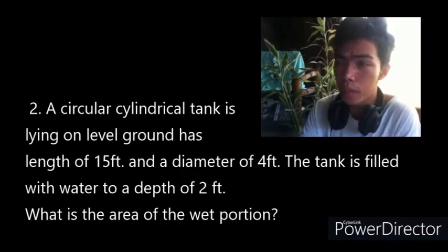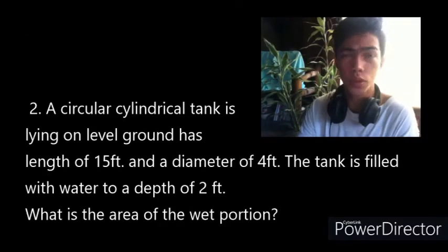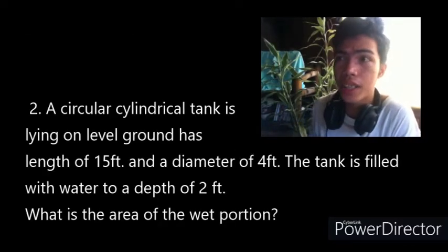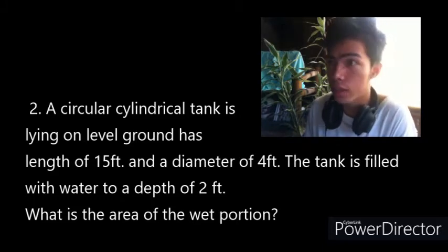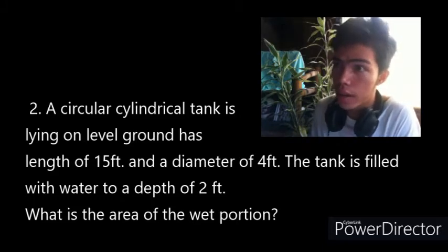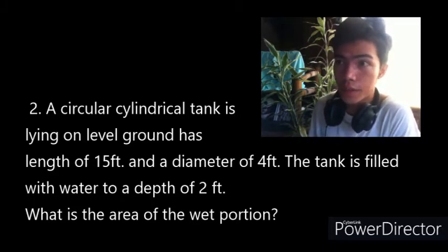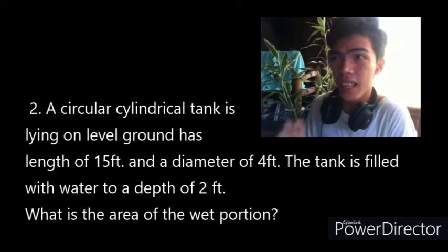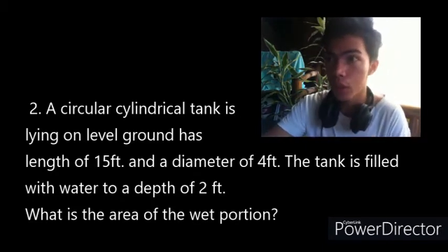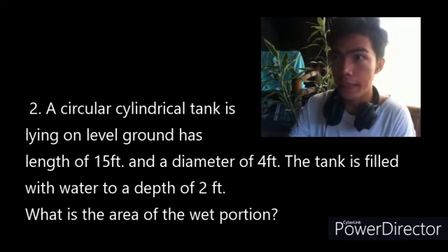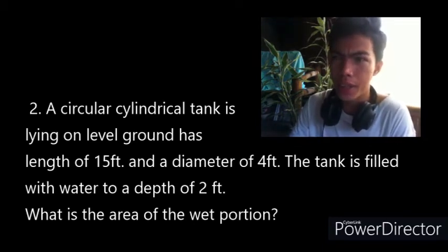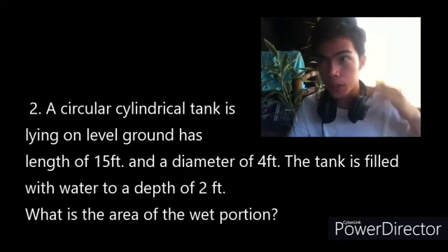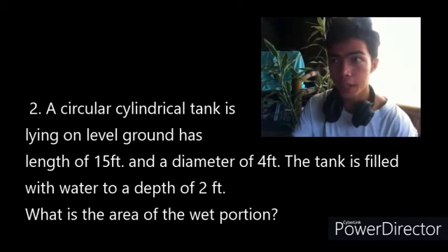For our second problem: a circular cylindrical tank is lying on level ground, has a length of 13 feet and a diameter of 4 feet. The tank is filled with water to a depth of 2 feet. What is the area of the wet portion? We're going to find the wet portion.